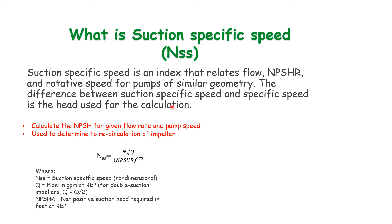If we know the suction specific speed, then we can calculate the NPSHR for a given flow rate and pump speed. Similarly, suction specific speed is normally used to determine the recirculation of the impeller. As we discussed, it's a combination of three parameters.